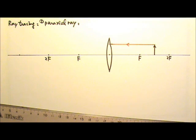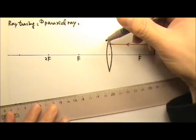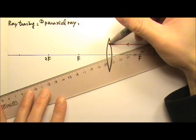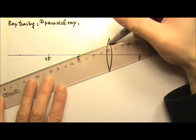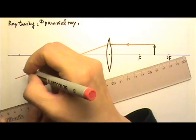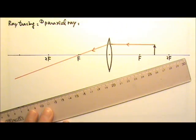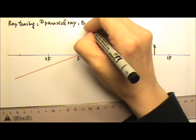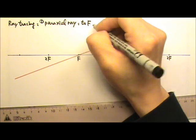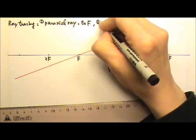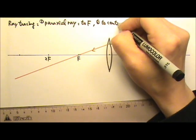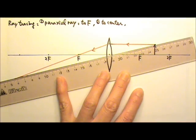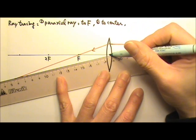Where do you think this ray is going to go? This ray is going to bend and go to the focal point, so this ray will go through the focal point. The next ray I am going to draw will be a ray that goes to the center of the lens.